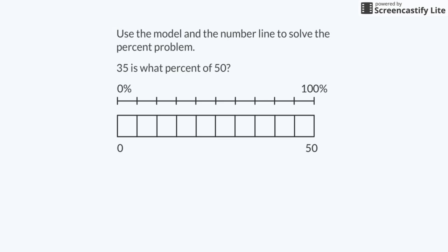I'll draw a number line to represent 100% and a model to represent 50. I will look at the model first. The whole is 50 and 50 divided by 10 is 5. Each square represents 5 parts of the whole. I need to shade in 35 parts. This would be 7 sections because 35 divided by 5 is 7.